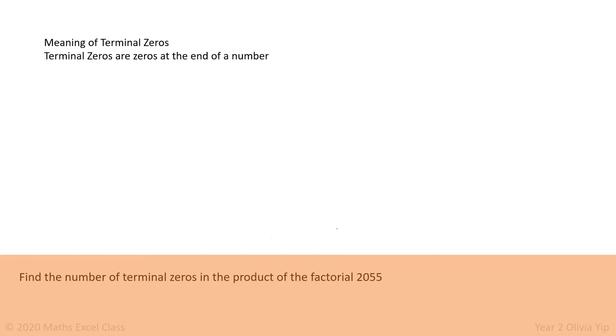Meaning of terminal zeros: Terminal zeros are zeros at the end of a number. Example 1: 10 has one terminal zero. 100 has two terminal zeros. 1010 only has one terminal zero because there's only one zero at the back.